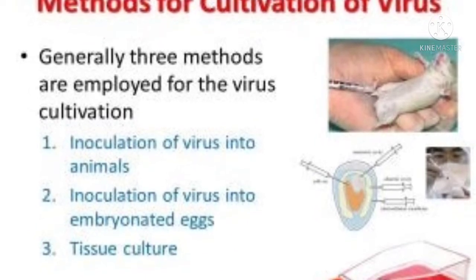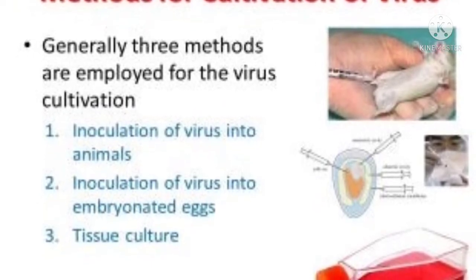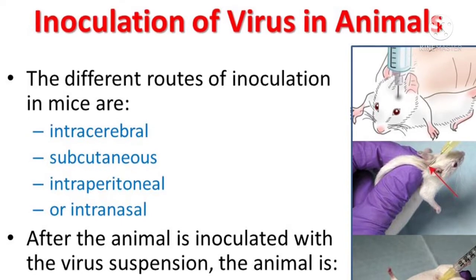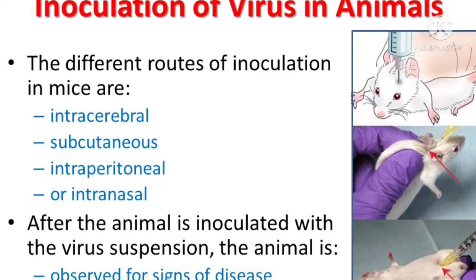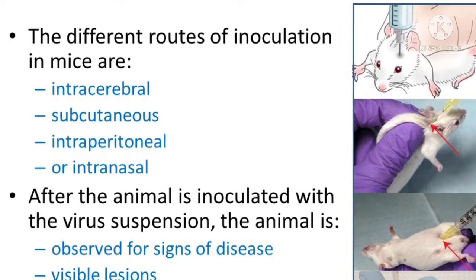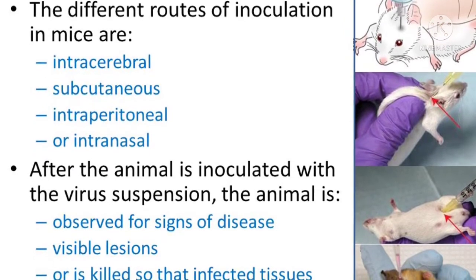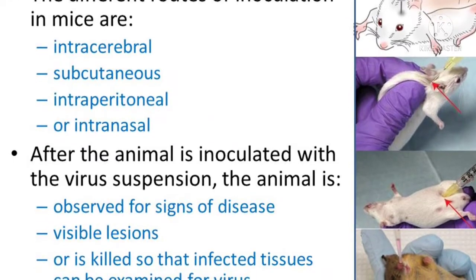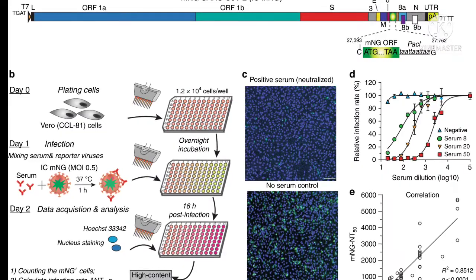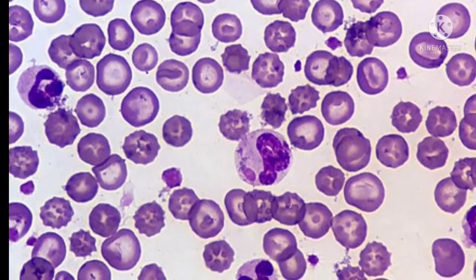Animal inoculation: infant mice are used in the isolation of arboviruses and coxsackieviruses, many of which do not grow in other systems. Animals may be inoculated by several routes: intracerebral, subcutaneous, intraperitoneal, or intranasal. After inoculation, animals are observed for signs of disease or death, then sacrificed and tissues tested for the presence of virus. Viruses are identified by neutralization test using antiviral sera.